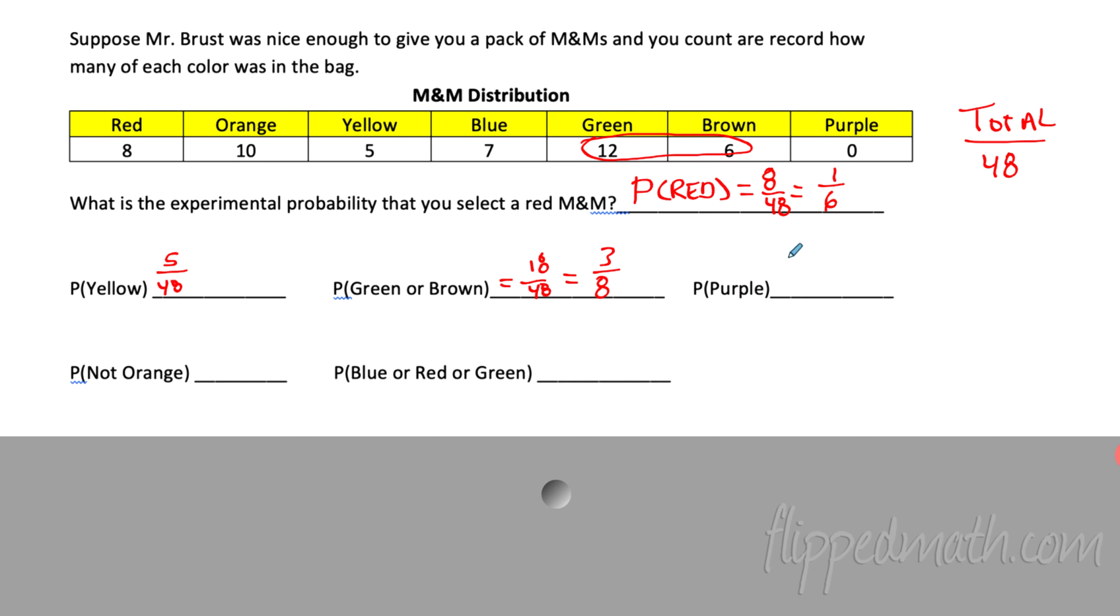What about purple? Purple is zero. That's easy. So that would be zero out of 48, but that's just zero. So I'm just going to write that as zero.